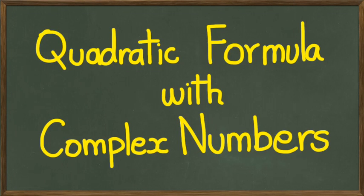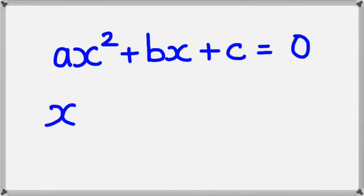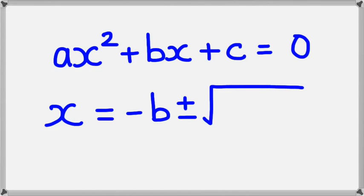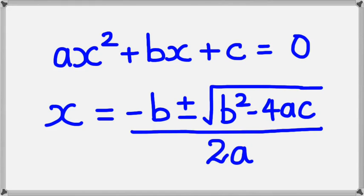Hey guys, in this session we're going to be looking at quadratic formula with complex numbers. Now some of you might have forgotten this, but if we have ax squared plus bx plus c equals 0, you could have then x is equal to minus b plus or minus b squared minus 4ac divided by 2a.